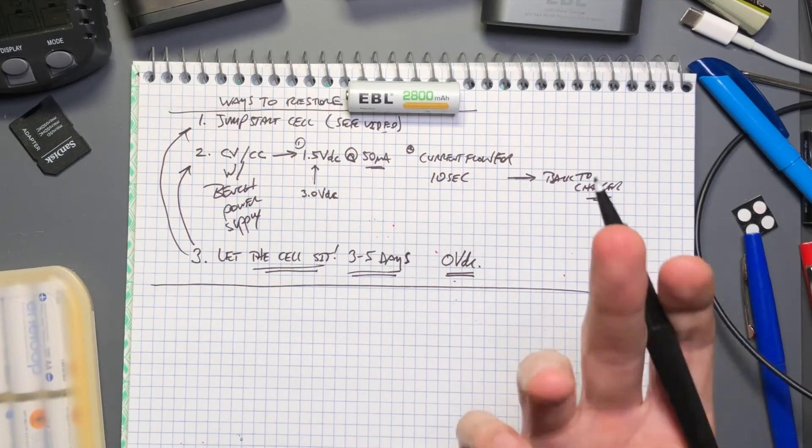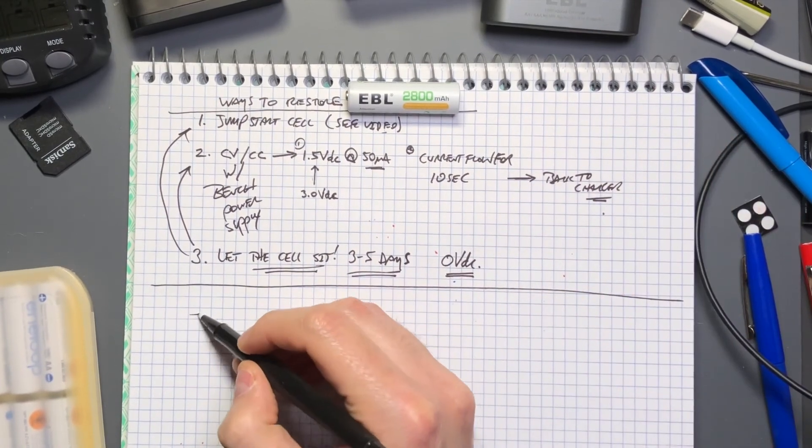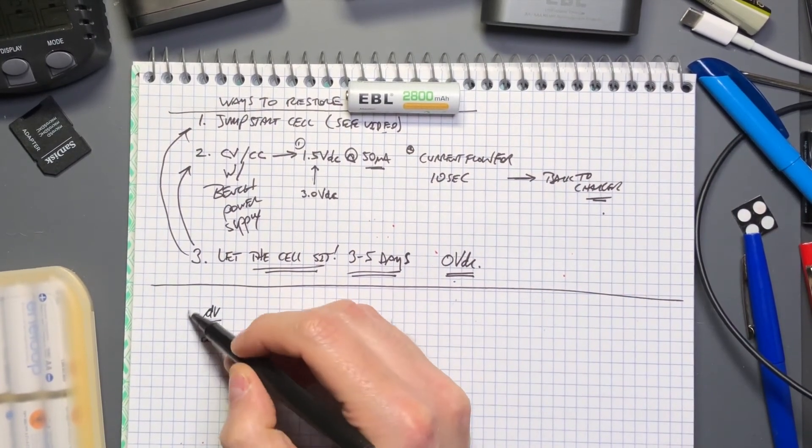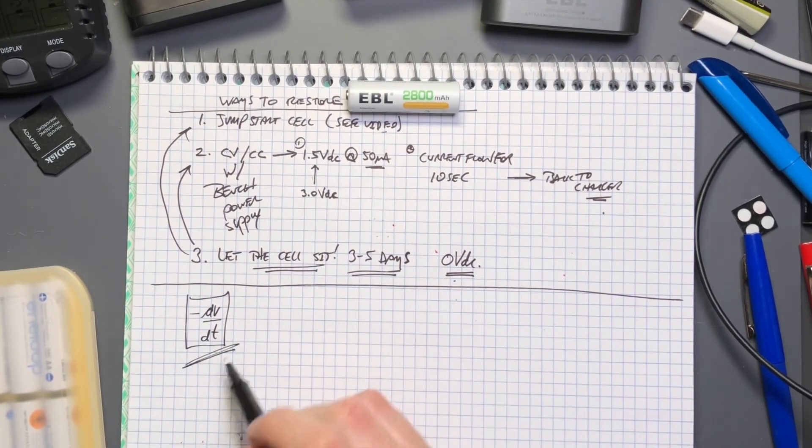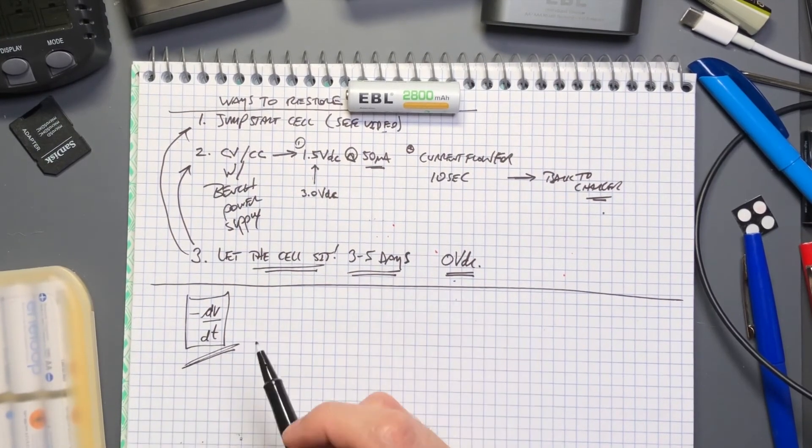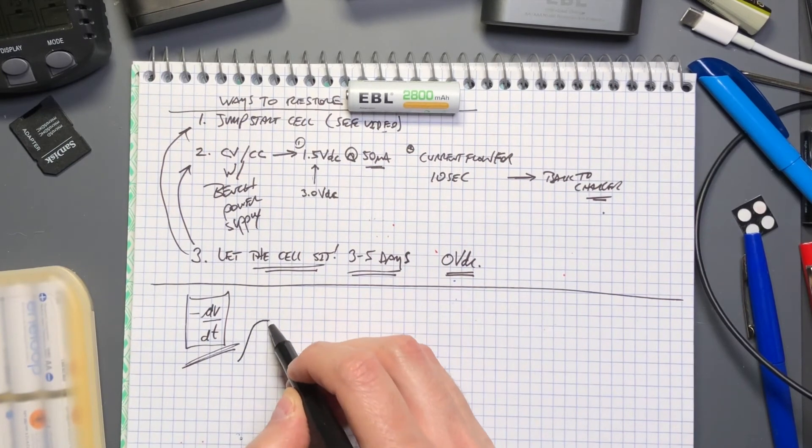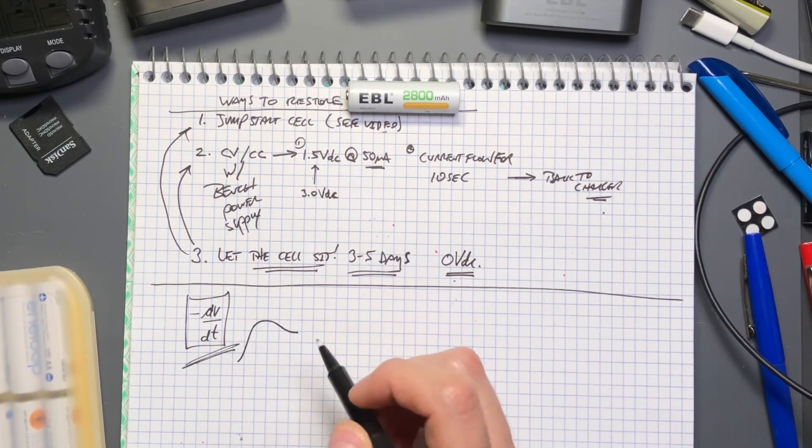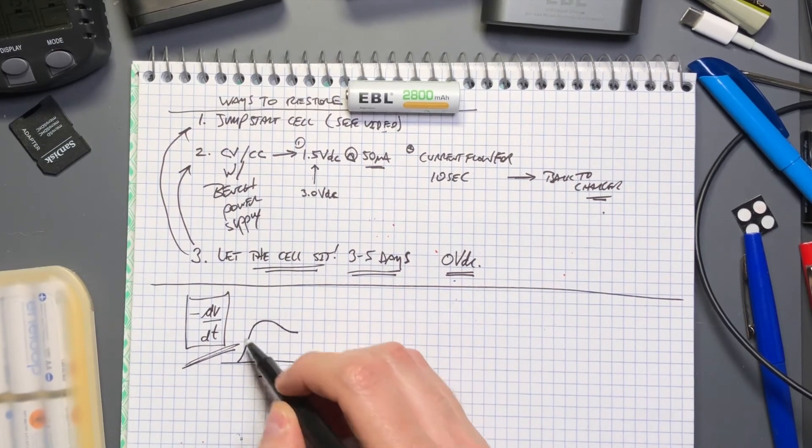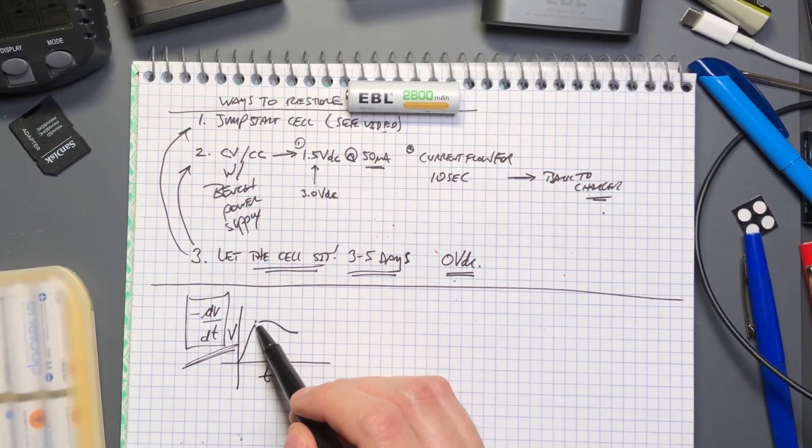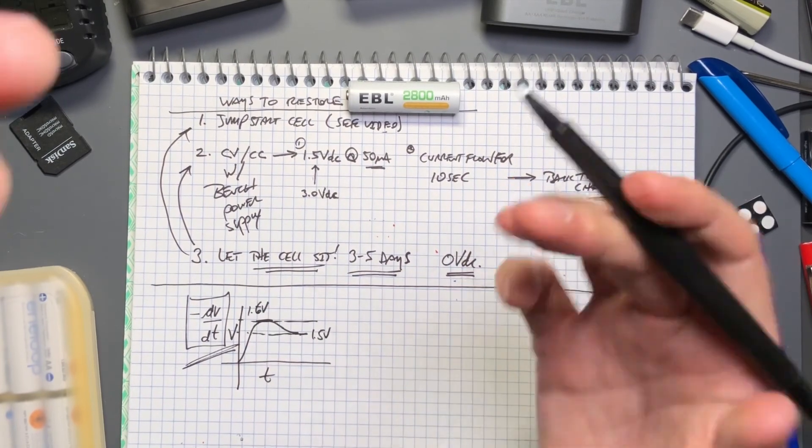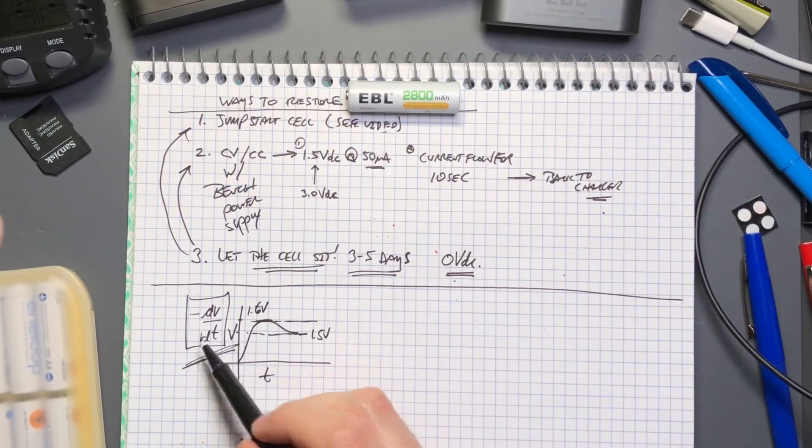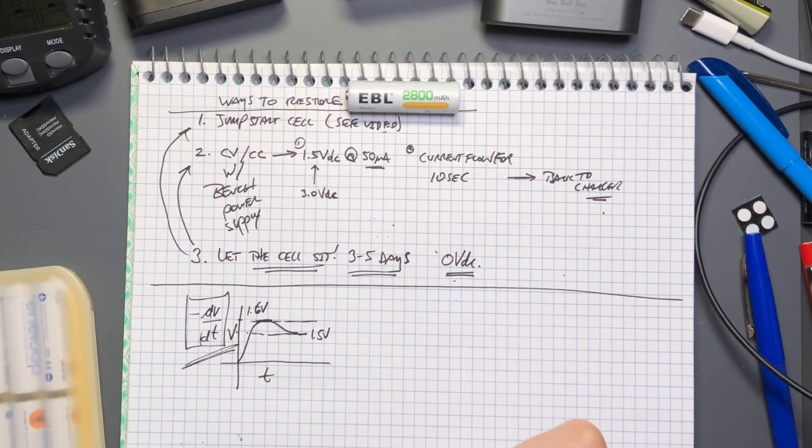In normal conditions when a nickel metal hydride cell gets toward this end of charge, it's no longer accepting any more charge chemically and instead it releases that as heat. Many of these chargers have the negative delta V/dt which I talk about in my first video. If they don't detect that fall back in voltage where the cell isn't accepting any more charge, it knows it's time to terminate charge.